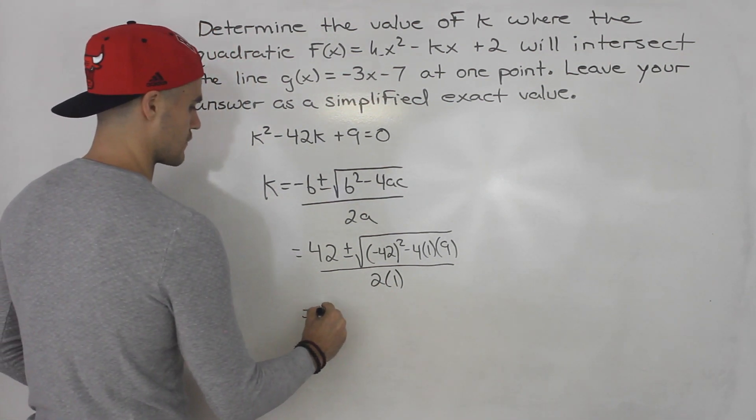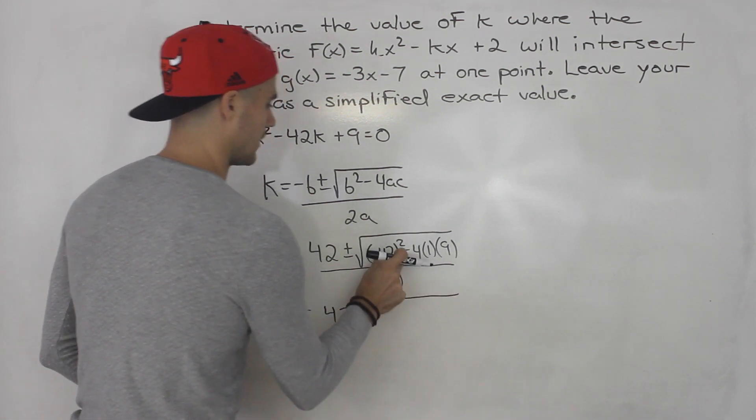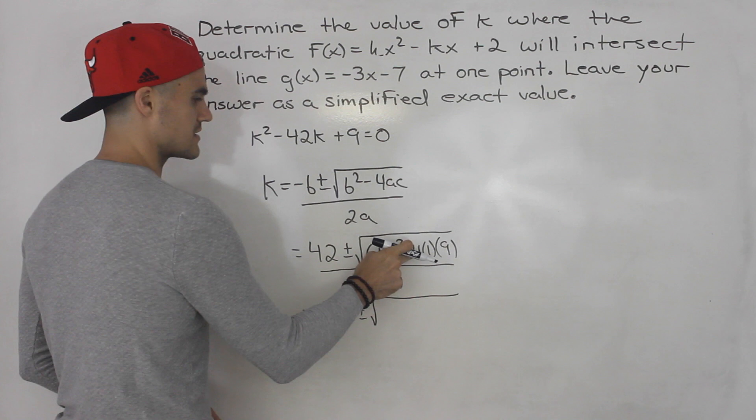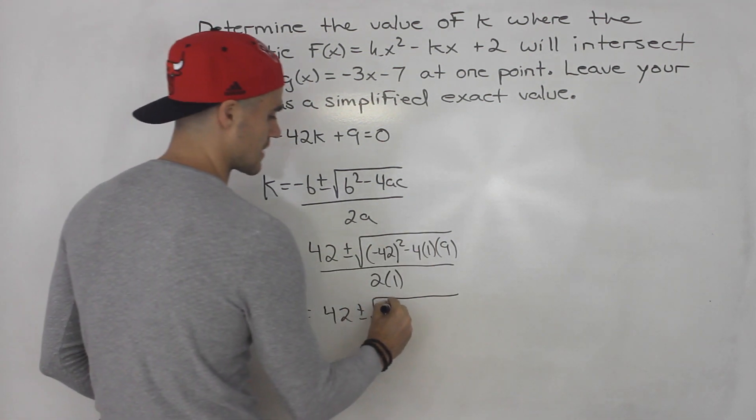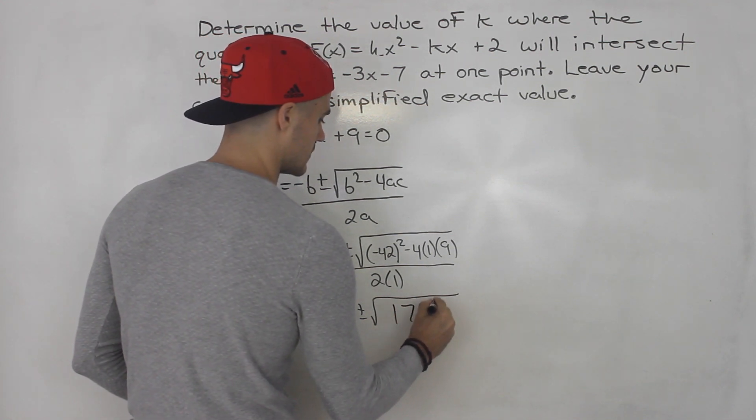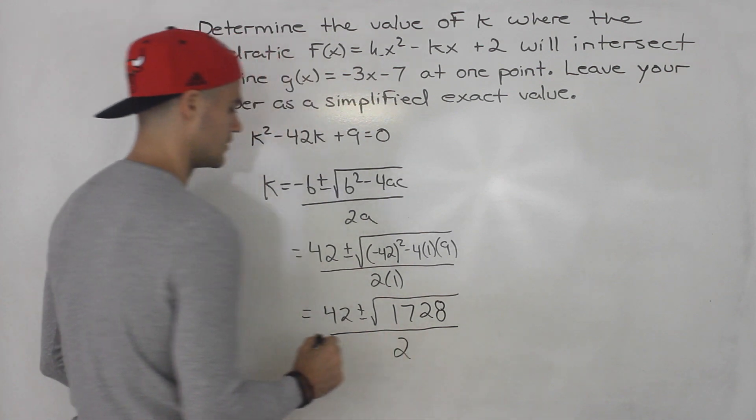And that's going to be 42 plus or minus. Now negative 42 squared minus 4 times 1 times 9. So negative 42 squared minus 36, that would give you 1728 in the radical. It's going to be all over 2.